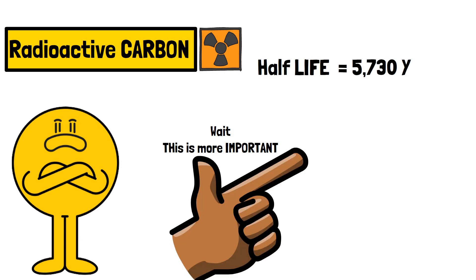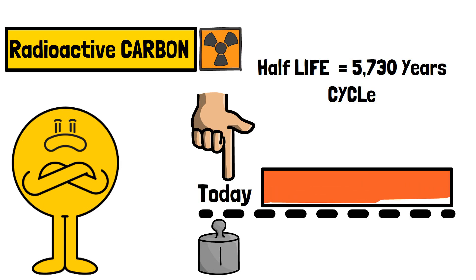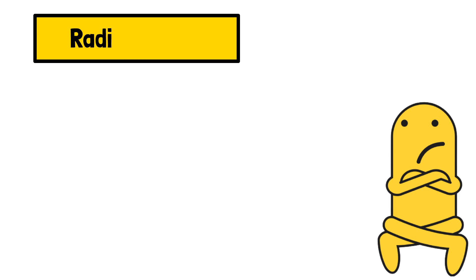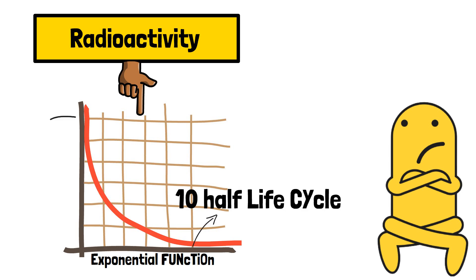The half-lifespan of radioactive carbon is 5,730 years, which means if we have 1 kilogram of radioactive carbon today, after a span of 5,730 years, only half of it will be remaining. And because radioactive decay follows exponential function, it will take around 10 half-life cycles for the whole carbon-14 to disappear, except 0.1 of itself.